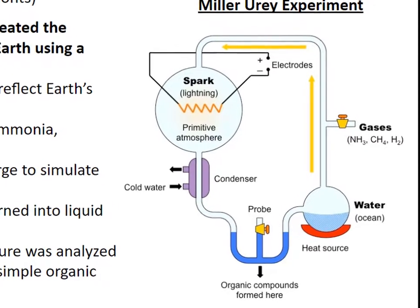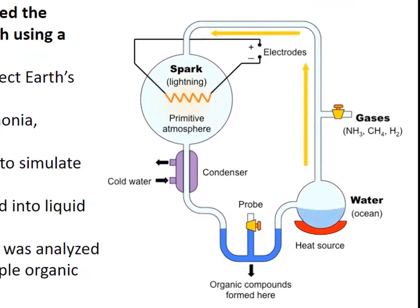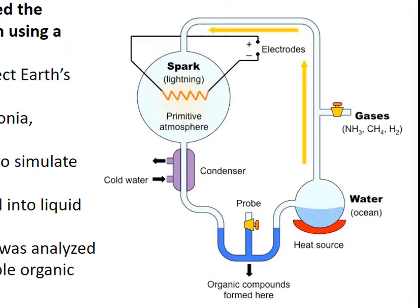First, water was boiled to vapor to reflect what is thought to be Earth's original conditions. This gassy water vapor combines with ammonia, methane, and hydrogen gases in the experimental hot atmosphere. Then, the gassy mixture was exposed to an electrical discharge to simulate lightning. After this, the mixture was cooled and turned into liquid water again. Over time, the condensed mixture was analyzed and found to contain traces of simple organic molecules.